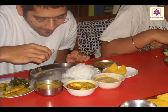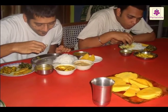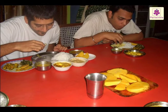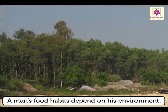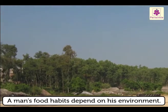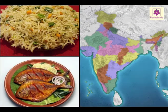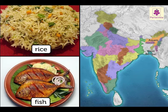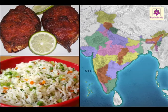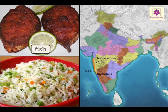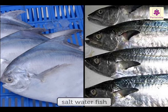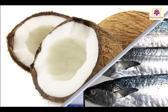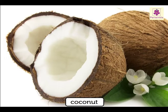The type of food a person eats also depends on where the person lives, meaning a person's food habits depend on their environment. People in West Bengal and Assam mostly eat rice and fish. People in Goa and the coastal areas of Maharashtra and Karnataka also eat a lot of fish and rice, but they eat saltwater fish and also use a lot of coconut in their cooking.